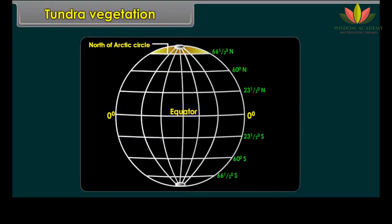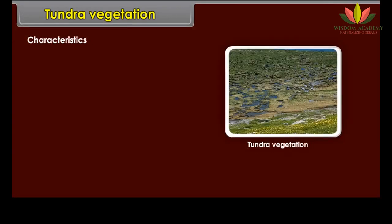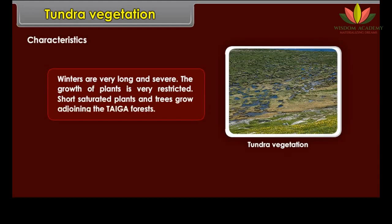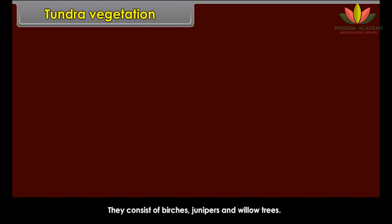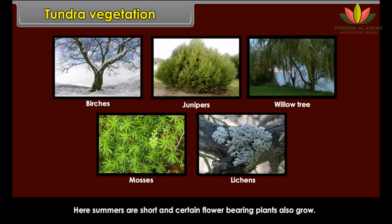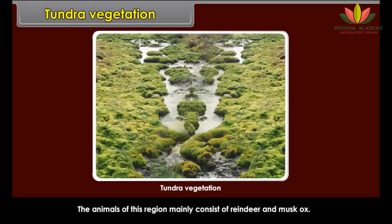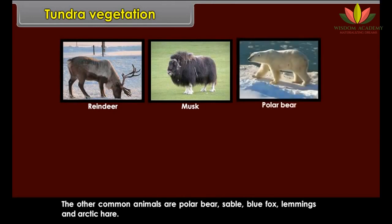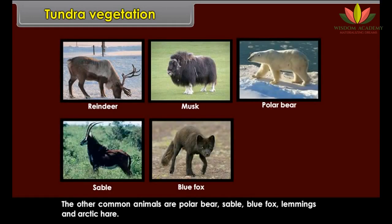Tundra Vegetation is found to the north of the Arctic Circle. Characteristics: Winters are very long and severe, and plant growth is very restricted. Short, stunted plants and trees grow adjoining the taiga forests, consisting of birches, junipers and willows. The main vegetation of this region is mosses, lichens and grasses. Summers are short and certain flower-bearing plants also grow. The animals mainly consist of reindeer and musk ox, as well as polar bear, sable, blue fox, lemmings and arctic hare.